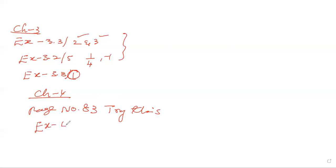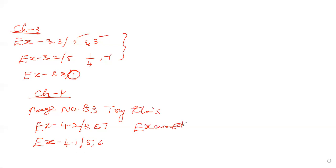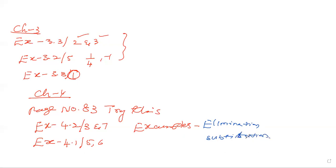In page number 83, try this. Next, exercise number 4.2 — question number 3 and 7. Exercise number 4.1 — questions 5 and 6. After that, there are two examples: the elimination method and substitution method. We are going to cover these two examples.